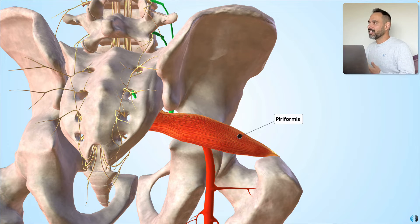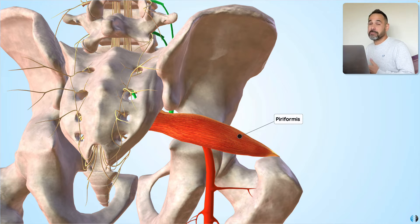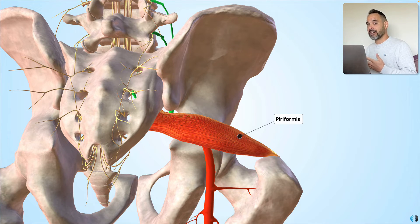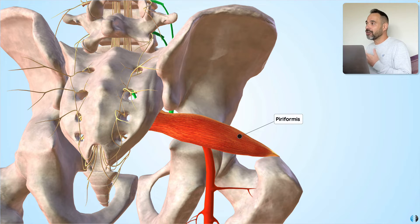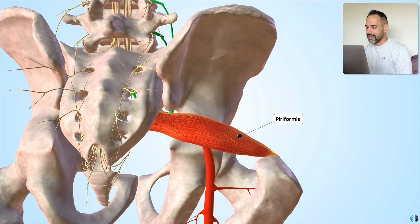Instead, a term you may have seen — piriformis syndrome — has actually been replaced by deep gluteal pain syndrome. This reflects the idea that it could be any number of structures in the gluteal region causing sciatica, making it more of an umbrella term. That said, deep gluteal pain syndrome is suggested to be responsible for sciatica only between 0.3 and 6% of the time — so not very often at all. Please do bear that in mind.